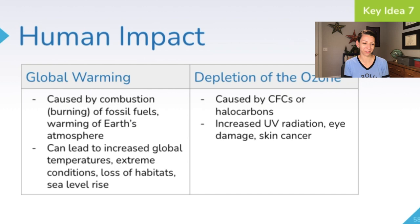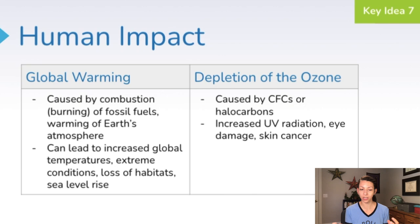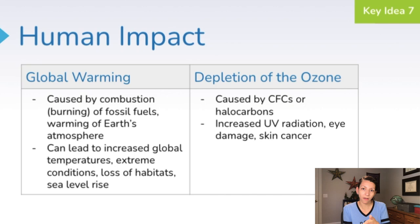I want to clear up one common misconception students have between global warming and depletion of the ozone layer, both of which are caused by humans. Global warming is generally caused by the combustion or burning of fossil fuels and leads to the warming of the earth's atmosphere. When we have more of those greenhouse gases, we create the greenhouse effect — an overall atmospheric warming effect which leads to increased global temperatures, extreme conditions, loss of habitat, and sea level rise.